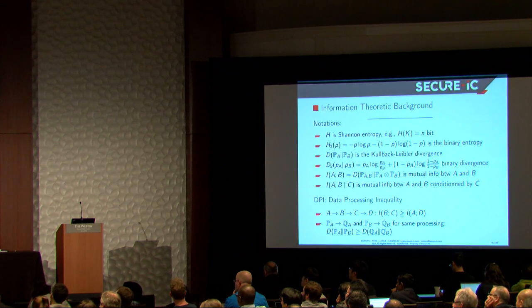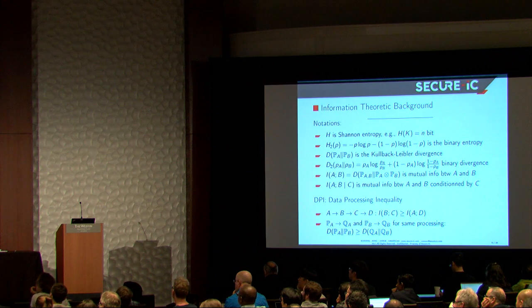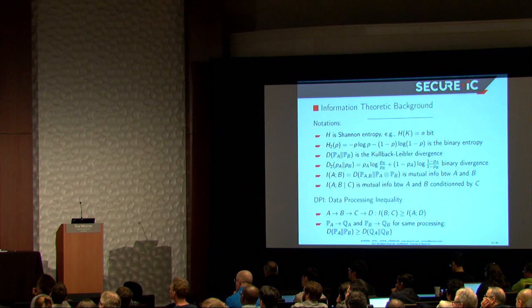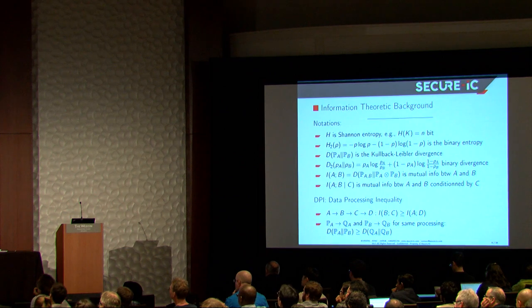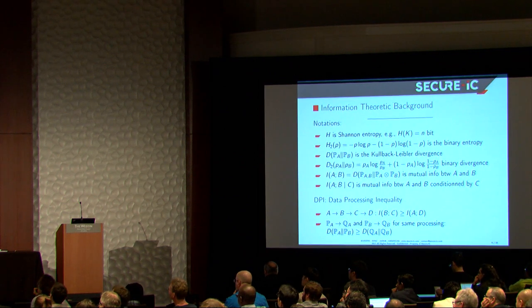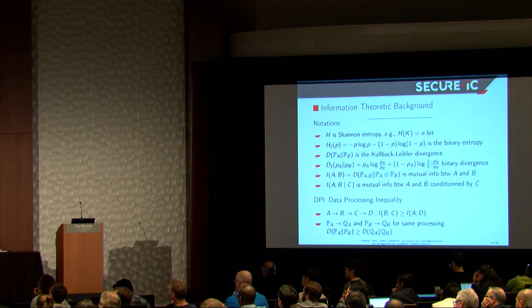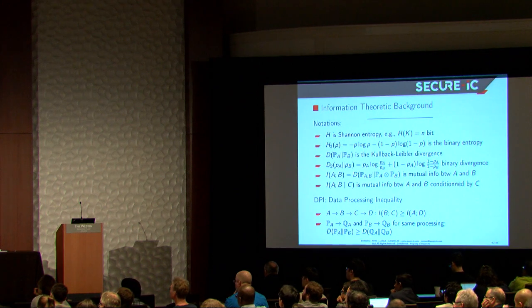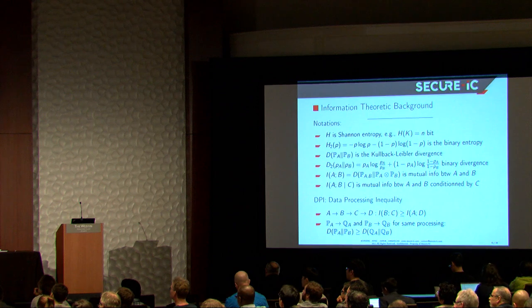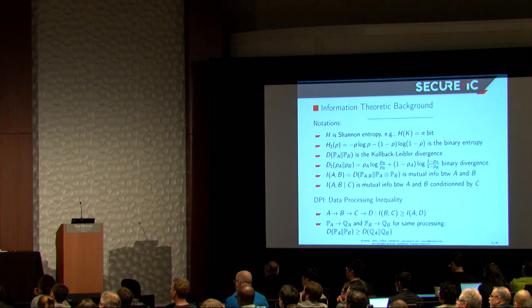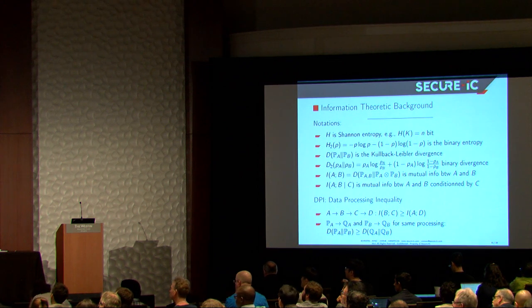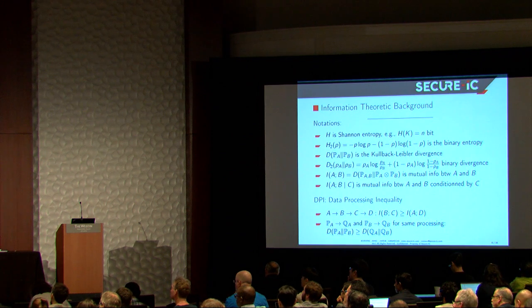Then we have the Kullback-Leibler divergence. Same, it can be in a binary case, and in this case we have this expression. And so the mutual information between two random variables is simply divergence of the probability of the joint random variables and the probability of each variable taken alone. We have also conditioning by variable. So this is all the notations I will be using, and I will support the results on one theorem from information theory, which is the data processing inequality.